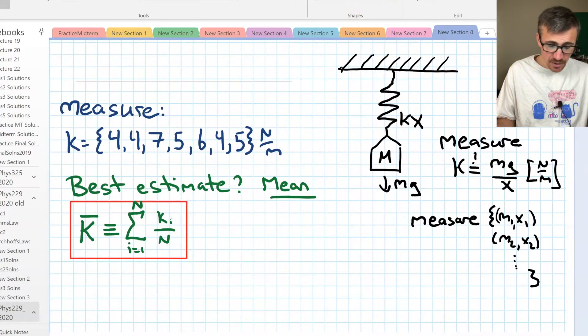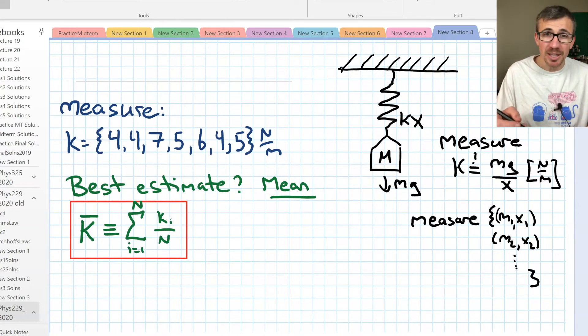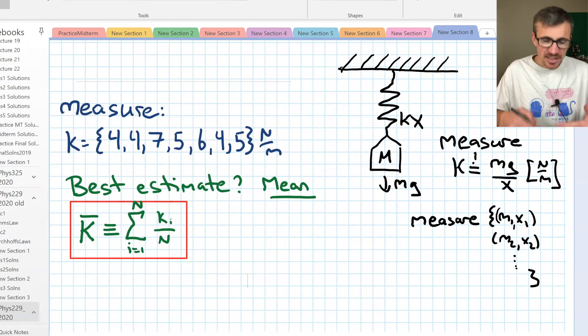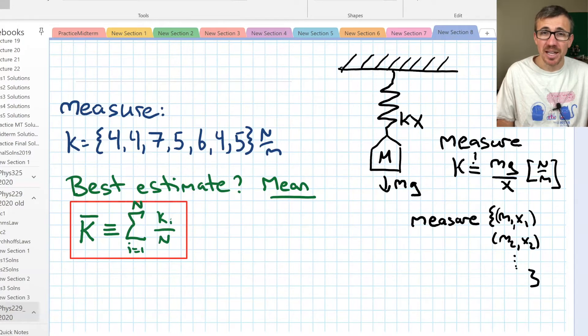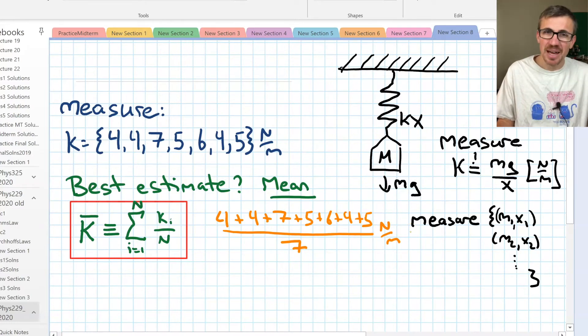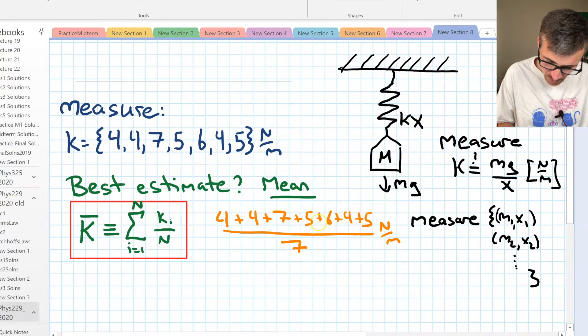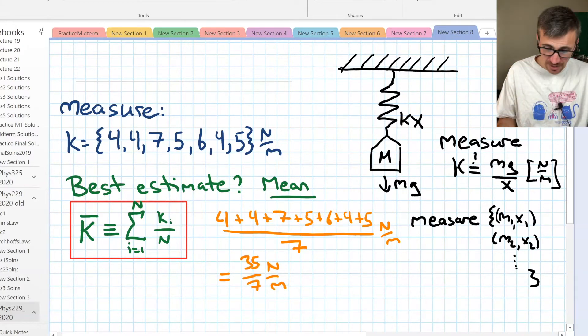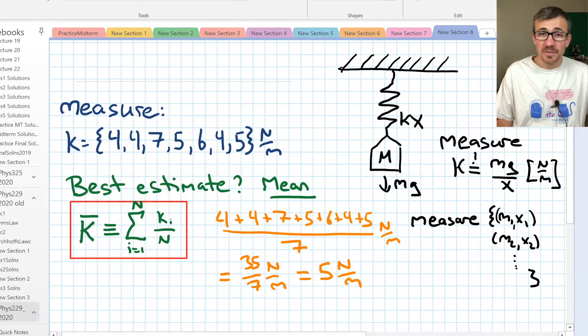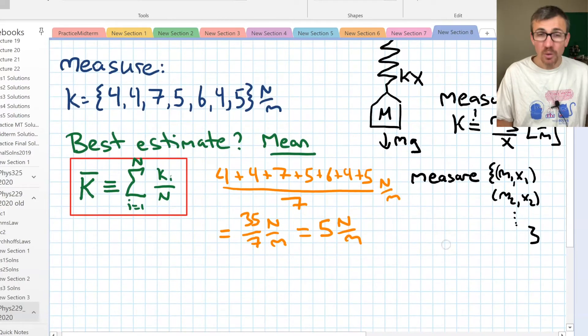Maybe no surprises. Our best estimate given these measurements is what K is most likely to be, given by this mean. We're going to prove that rigorously next video. But for now, let's accept it as a reasonable statement. In this case, let's just grind through it. Let's plug in the numbers and add it all up here. If I do my math right, I get 35 newtons per meter divided by seven. So our best estimate given all these measurements of the spring happens to be five newtons per meter. That's great, that's pretty straightforward.